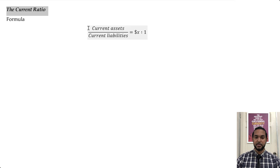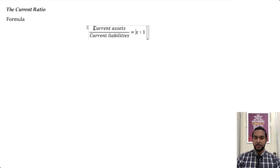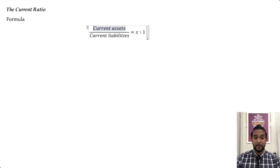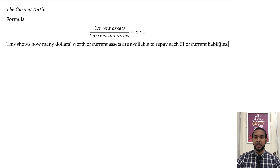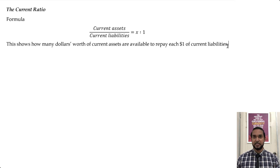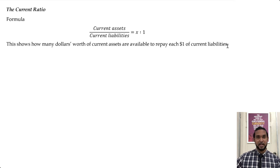The current ratio formula is current assets divided by current liabilities, expressed as X to 1. This shows how many dollars worth of current assets are available to repay each dollar of current liabilities. Think of it like a pizza: your current assets are the pizza and the number of people sharing it are your creditors. If you have eight slices and two people, everybody gets four slices.